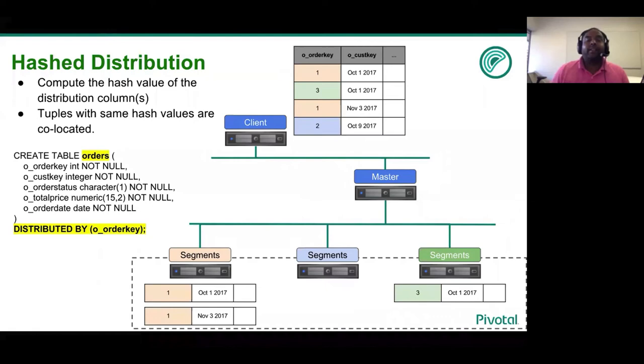Lastly, the order with order key two is placed on segment two. This is a simplistic example. In reality, based on the distribution policy, we will hash based on the data values of these distribution columns and then place those tuples in the corresponding segments.